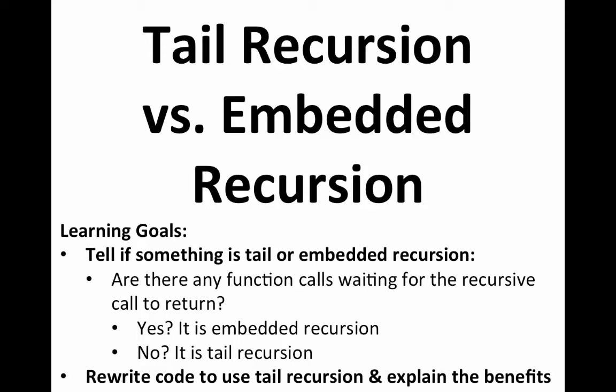As an exercise to think more deeply about how recursion really works, we're going to look at two variations on recursion: tail recursion and embedded recursion. Most of the stuff we've written so far has been embedded recursion. The key thing is going to be: are there any function calls waiting for the recursive call to return? If so, it's embedded recursion. Otherwise, nothing is waiting on it — it's tail recursion.